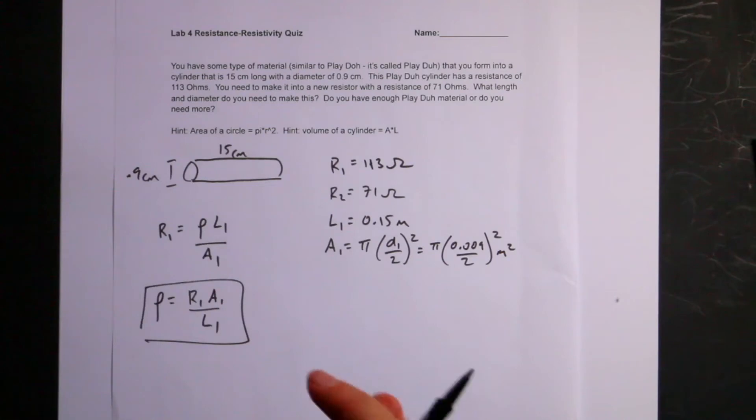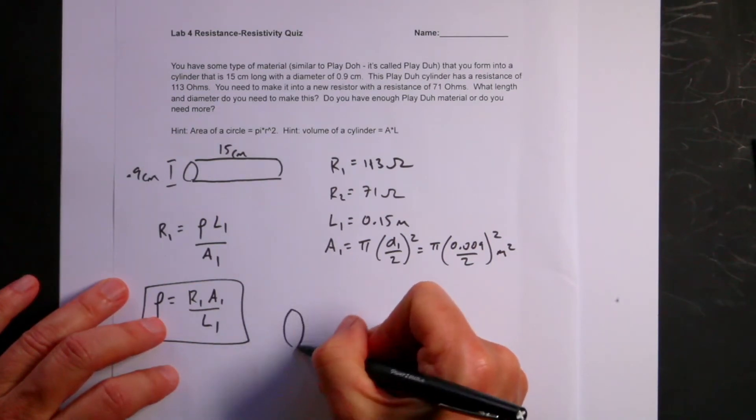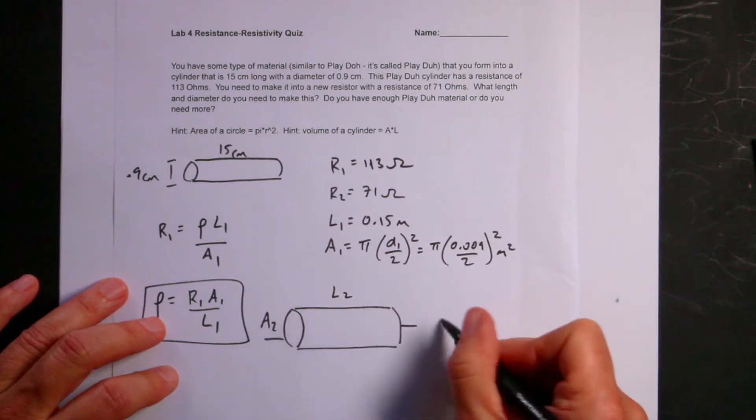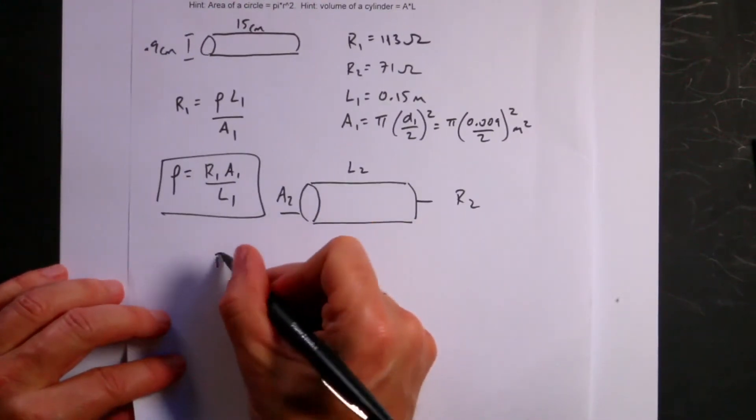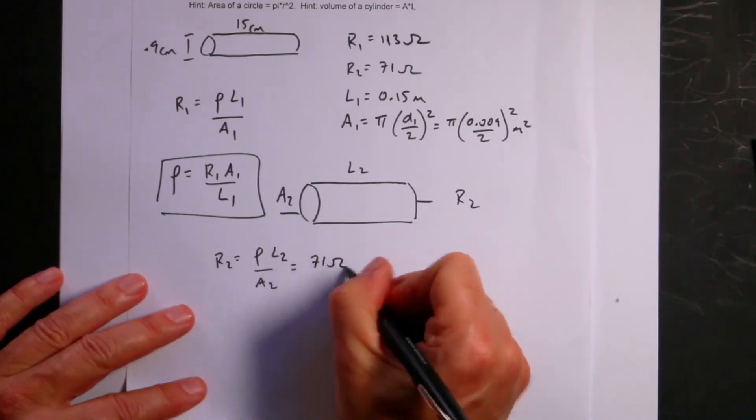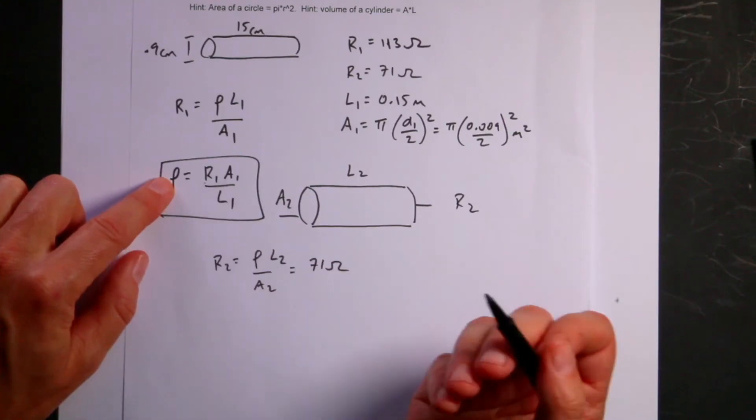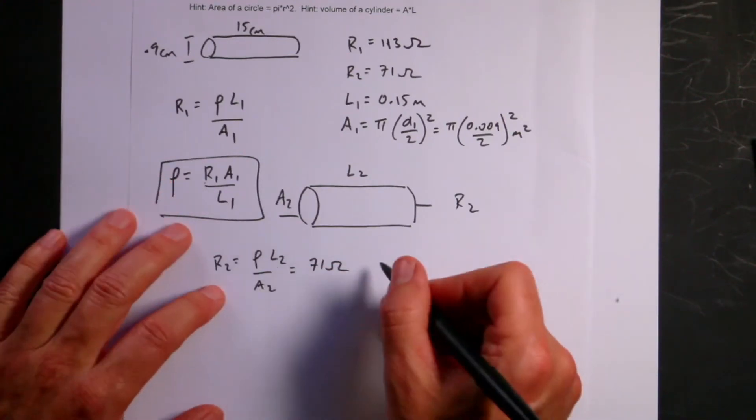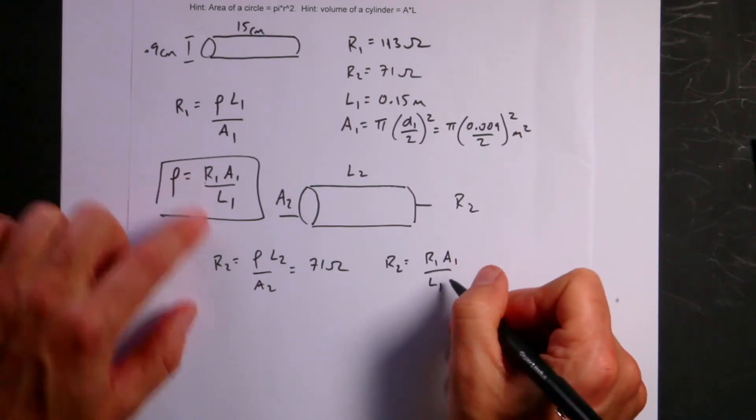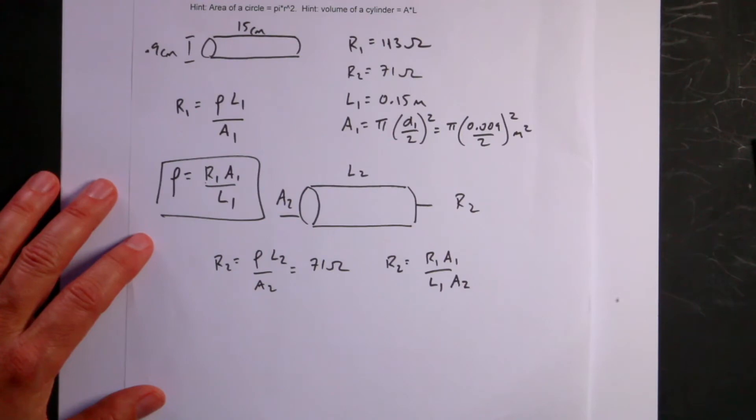Now, if I want to reshape this, the device will have a different resistance but the same resistivity. Let's take my new device. Let's call this L2 A2 and it has a resistance R2. I can say R2 equals rho L2 over A2 and I want that to be equal to 71 ohms. I can write in my expression for the resistivity right here. I know I didn't calculate the resistivity. I'll do that in a little bit. But I don't need to, right?